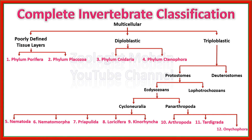Now let's check which of these phyla are coelomate, pseudocoelomate, or acoelomate. Nematodes are pseudocoelomates; Nematomorpha are complete pseudocoelomates. Priapulida is an exception — some members are coelomate and some pseudocoelomate. Among Loricifera, some organisms have no body cavity (acoelomate) while some have pseudocoelom. Kinorhynchia are all pseudocoelomates. Panarthropods — Arthropoda, Tardigrada, Onychophora — all have a complete true coelom.